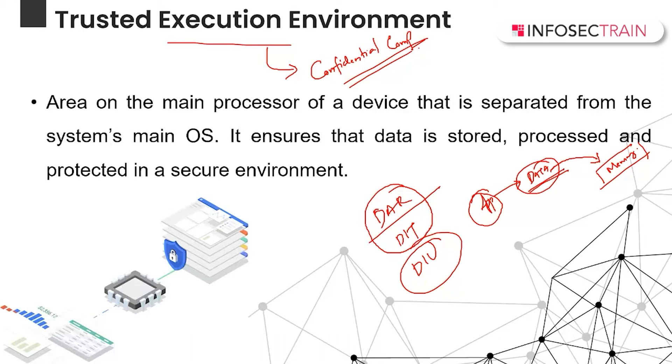That means that whenever an application wants to process some data which is highly confidential, this particular application which is only authorized to access the data will be able to access it. For every other kind of applications or services or users or anything, they will be denied access to that secure environment. So as it is completely secure while working or while in use, this is a key technology which can help us to protect the data in use while it is getting processed.